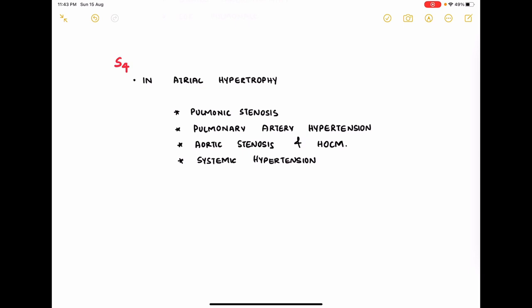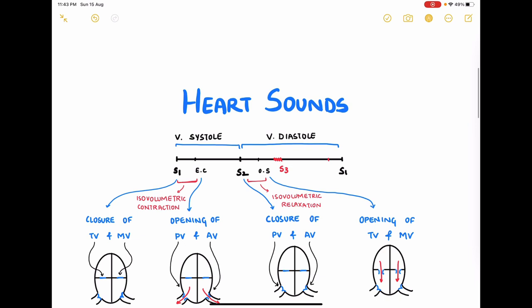S4 is heard in conditions where there is atrial hypertrophy. In case of pulmonic stenosis and pulmonary artery hypertension, a right sided S4 is heard while aortic stenosis, valvular or subvalvular aortic stenosis and systemic hypertension, you will see a left sided S4. Let's draw this in this diagram. So this is just pre-systolic or in late diastole. This is where you see the S4.